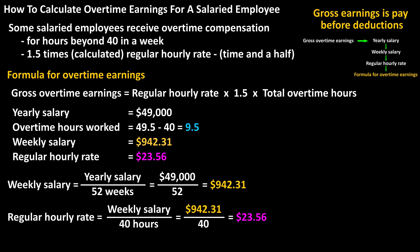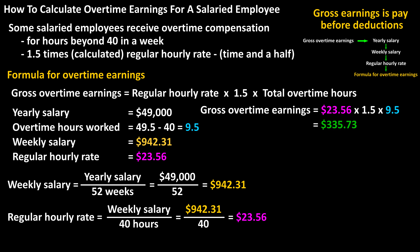Now we have everything we need to use the formula. Gross overtime earnings equals $23.56 (the regular hourly rate) times 1.5 times 9.5 (the overtime hours worked). Calculating out, we get $335.73 as their overtime pay for the week.